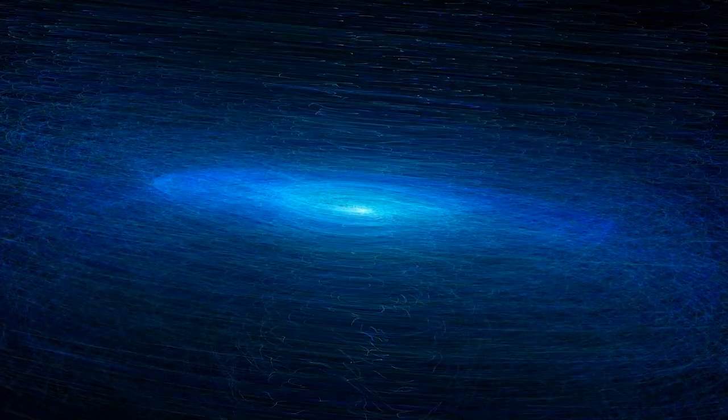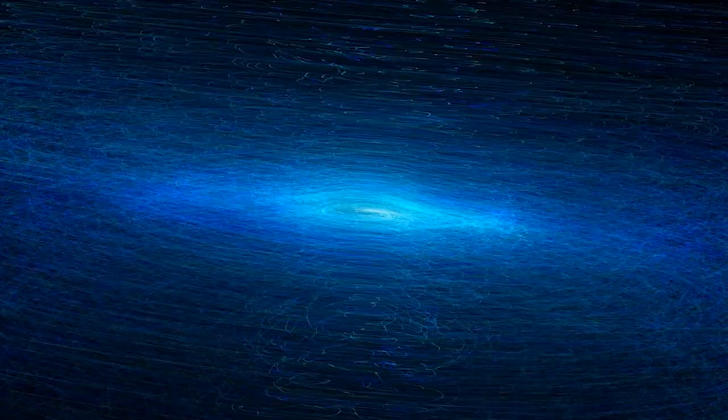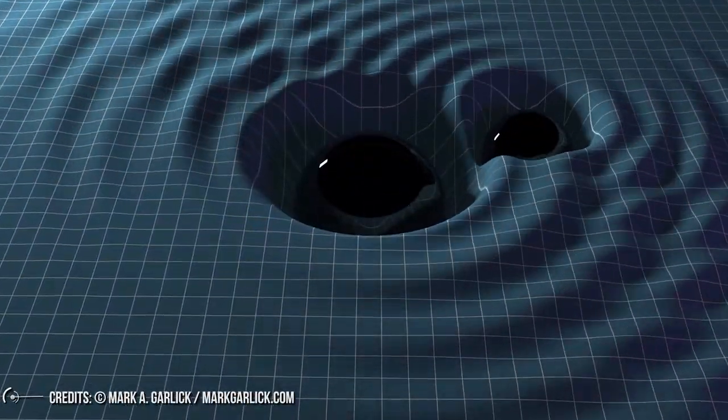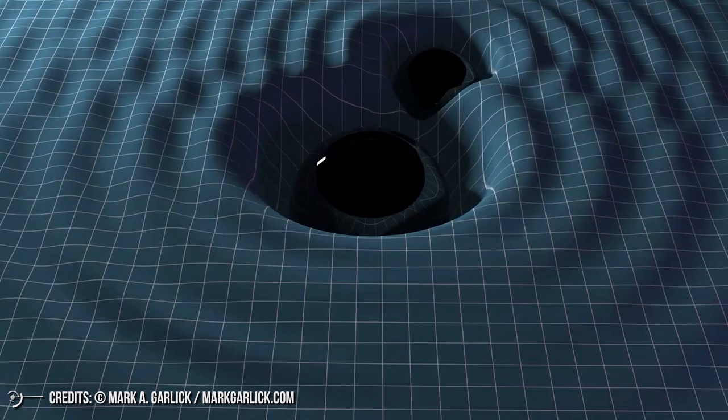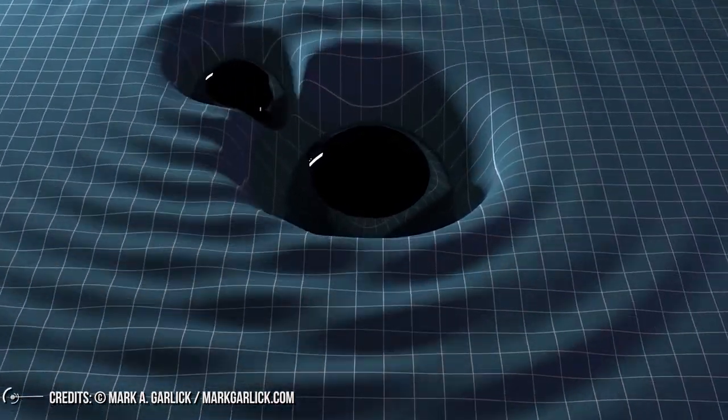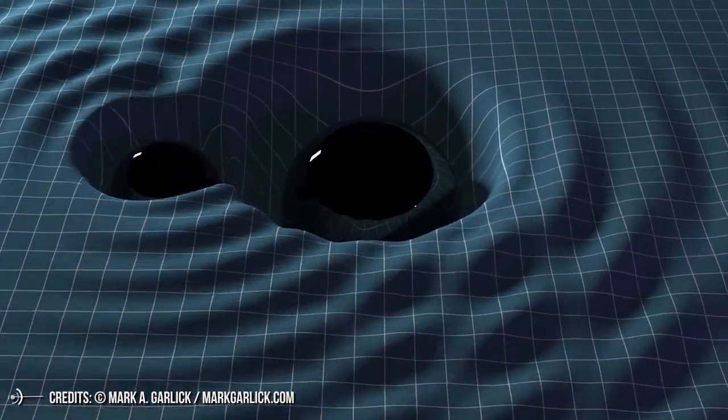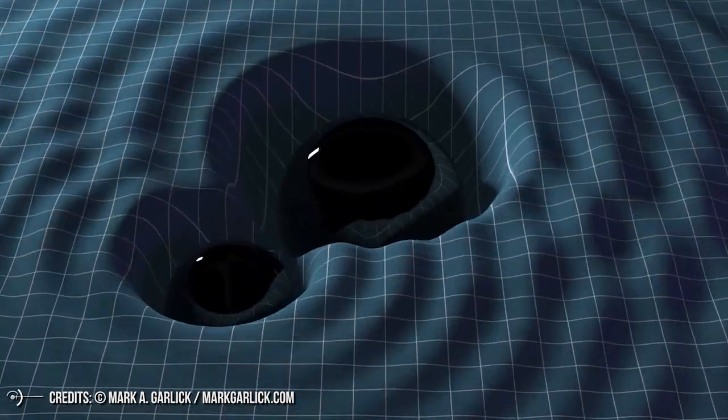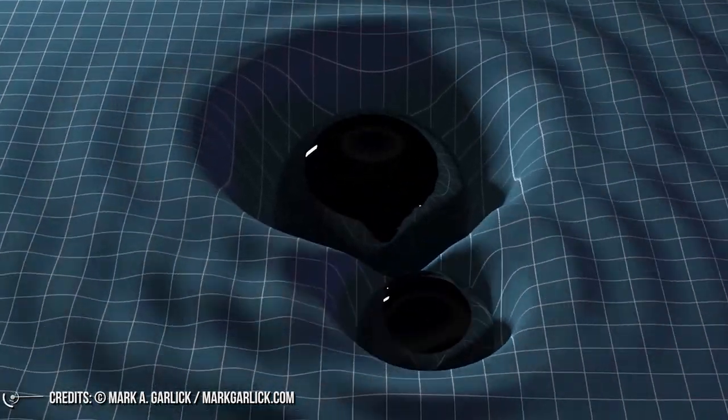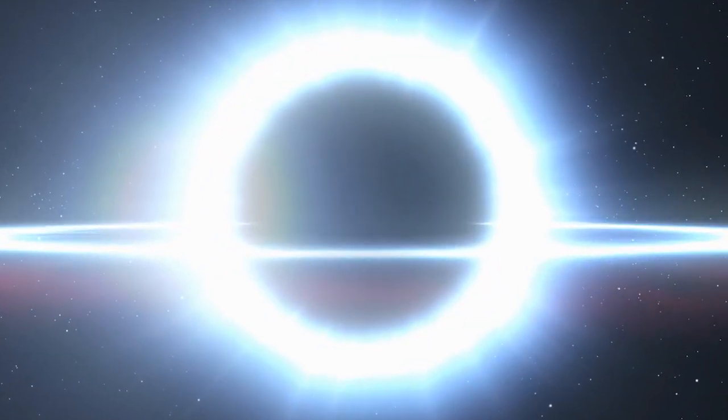Gravitational waves were detected directly for the first time on September 14, 2015, and announced to the world on February 11, 2016. The wave was produced by a catastrophic event: the collision of two black holes of mass equivalent to about 29 and 36 solar masses, which approached each other to penetrate and give rise to a new gigantic black hole of about 62 solar masses.